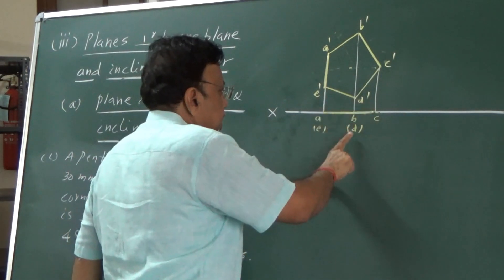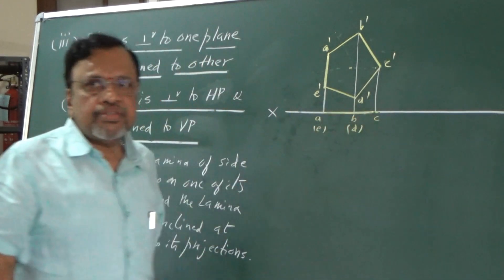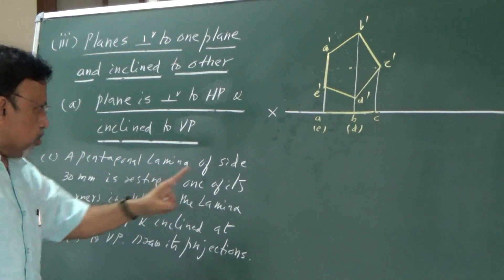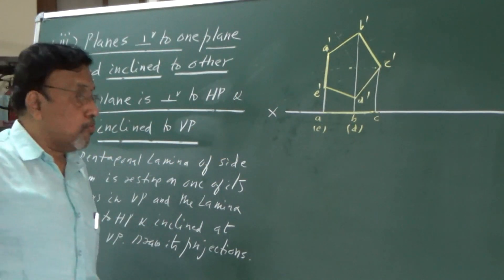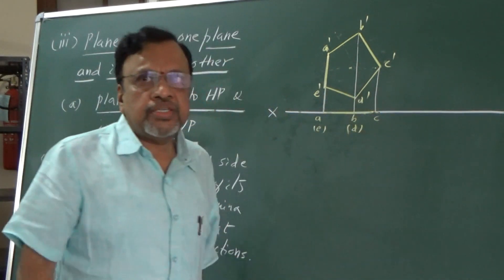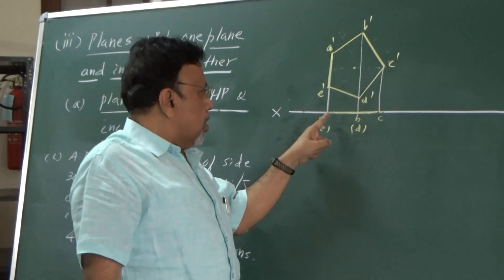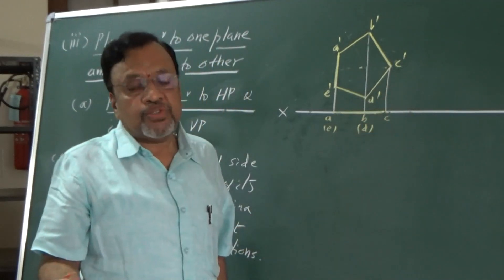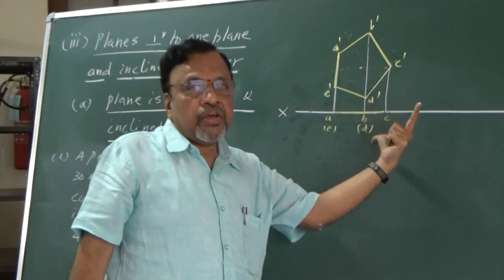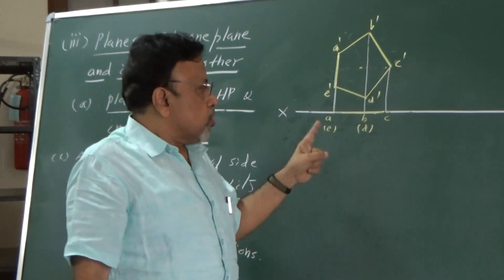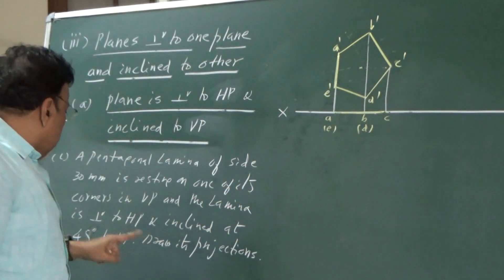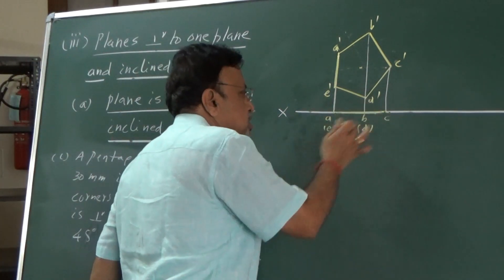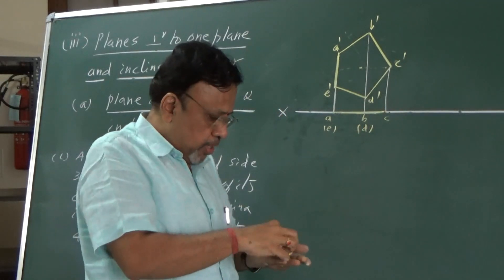How do you redraw this figure? For this particular case, I want a corner to be on VP. Since I want a corner on VP, this point should be on the XY line. If it were resting on one of the sides in VP, I would have taken a side on XY. So remember, you should be careful about which direction you are orienting. In this particular problem, since I want one of the corners to rest on VP, I need to redraw the figure such that the corner point is on XY itself.